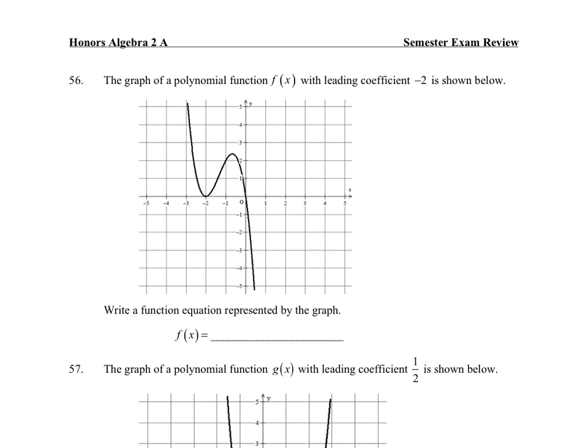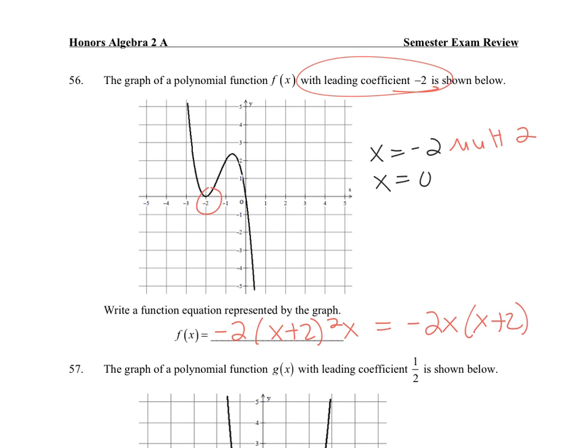Write the equation. If my zeros are at x equals -2 and x equals 0, but I notice that -2 here has a multiplicity of 2. My equation is going to be -2 as a leading coefficient, (x + 2) squared, and then times x. So I'll rewrite that as -2x(x + 2)².